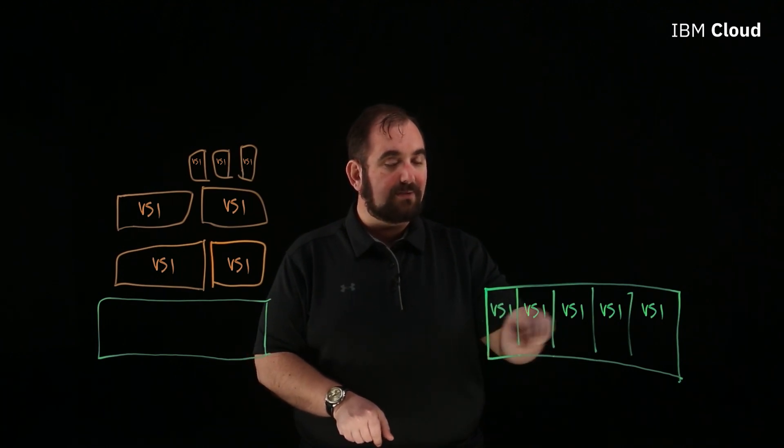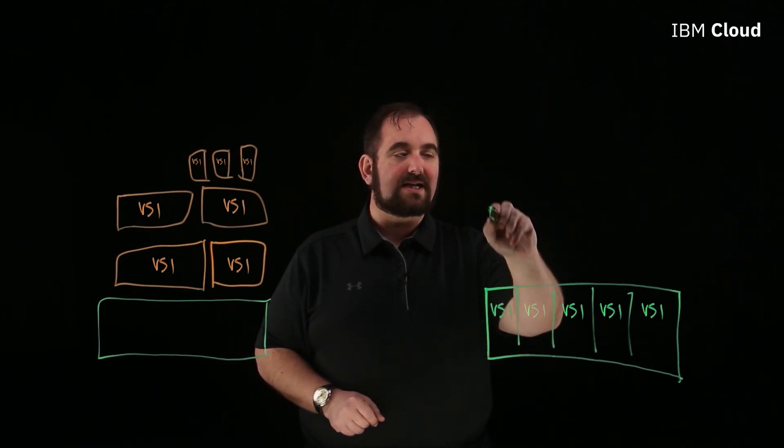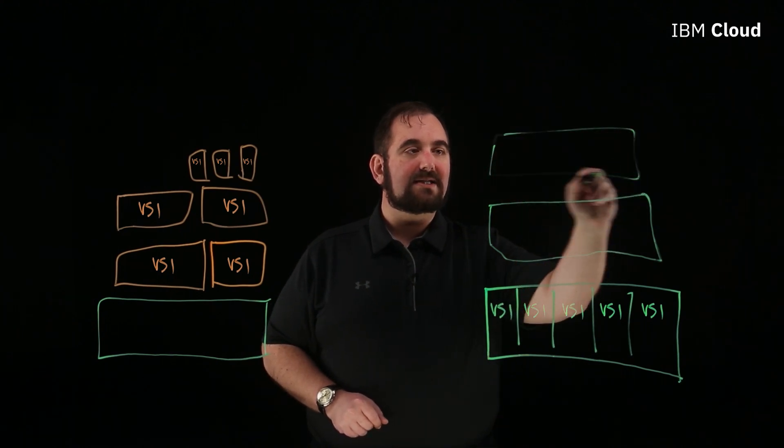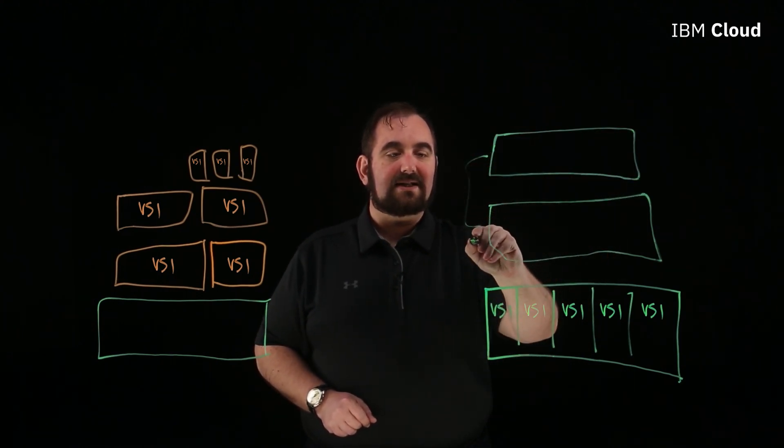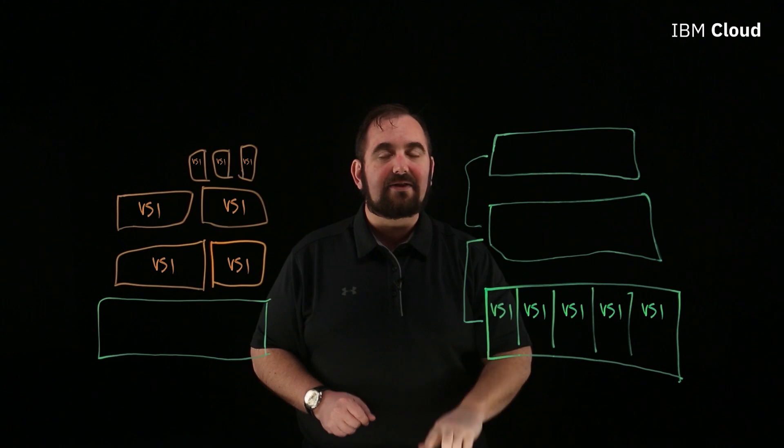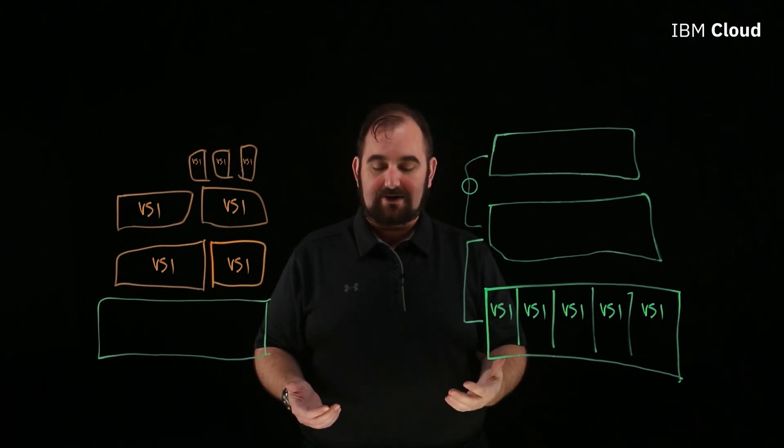If we think about our example over here where we've got our multi-tenancy and we've got multiple multi-tenant boxes, every one of these has to link together. And that link together takes time. There is a latency penalty that you pay.